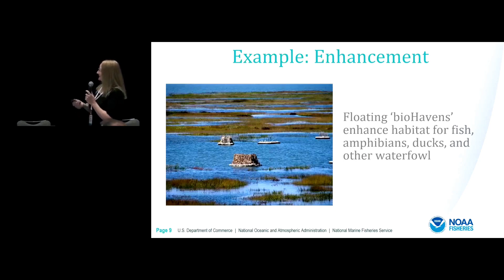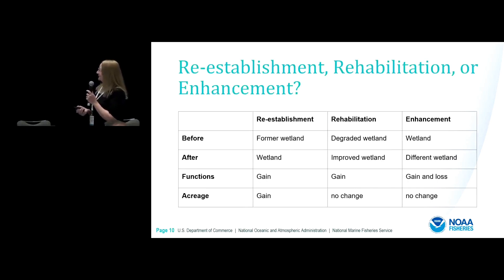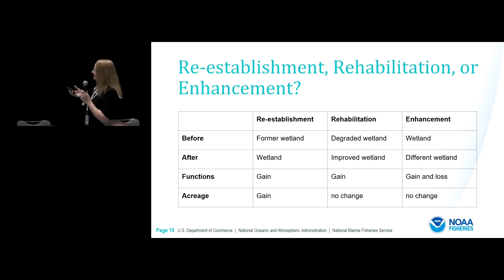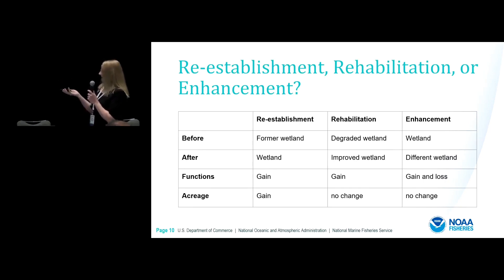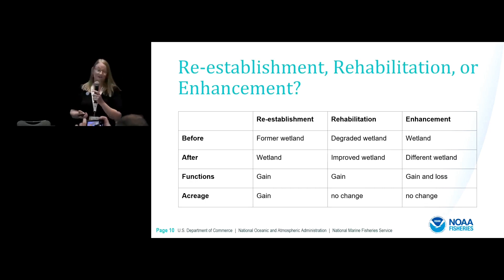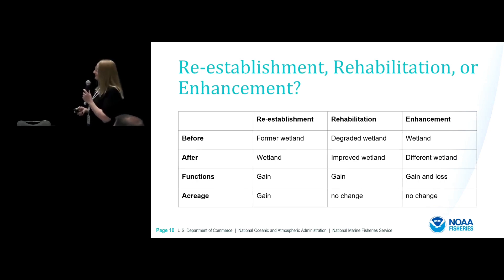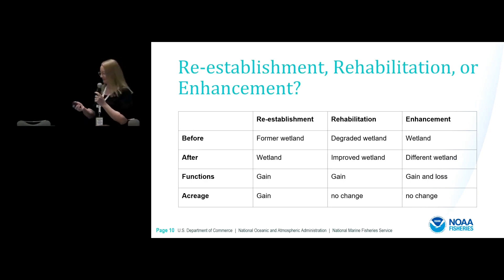For example, you put in biohavens and enhance habitat for fish, ducks, and other waterfowl. One way to keep track of this is a little chart we put together showing what is the site before, what is the site after, what would you call it, and what kind of functions and acreage gain or change happens. Again, what's most important is that we're doing this work, and it's probably less important what it gets labeled. But if there's ever a point at which we really need to keep track of this, this is the structure we should be using.